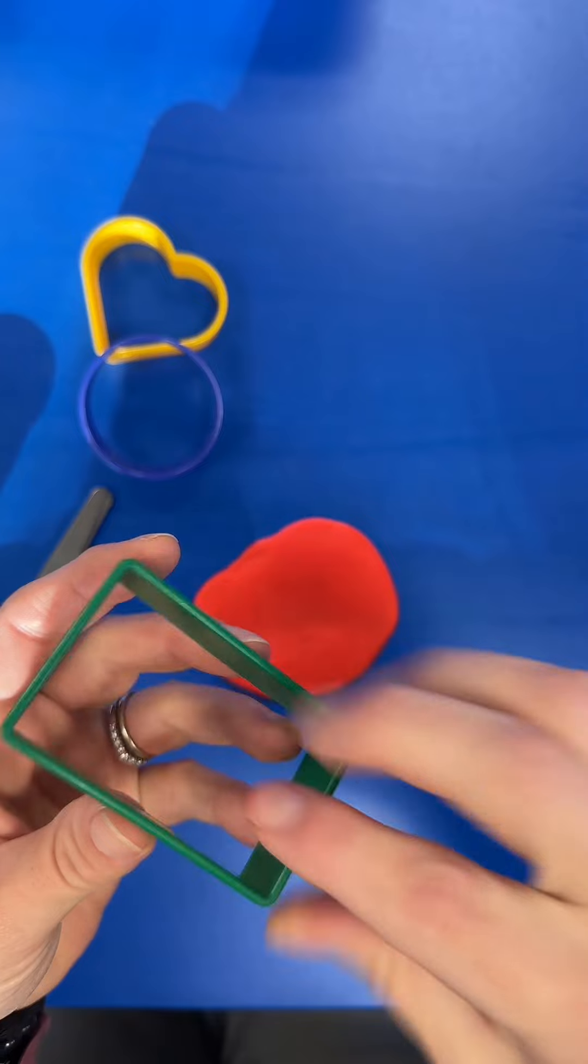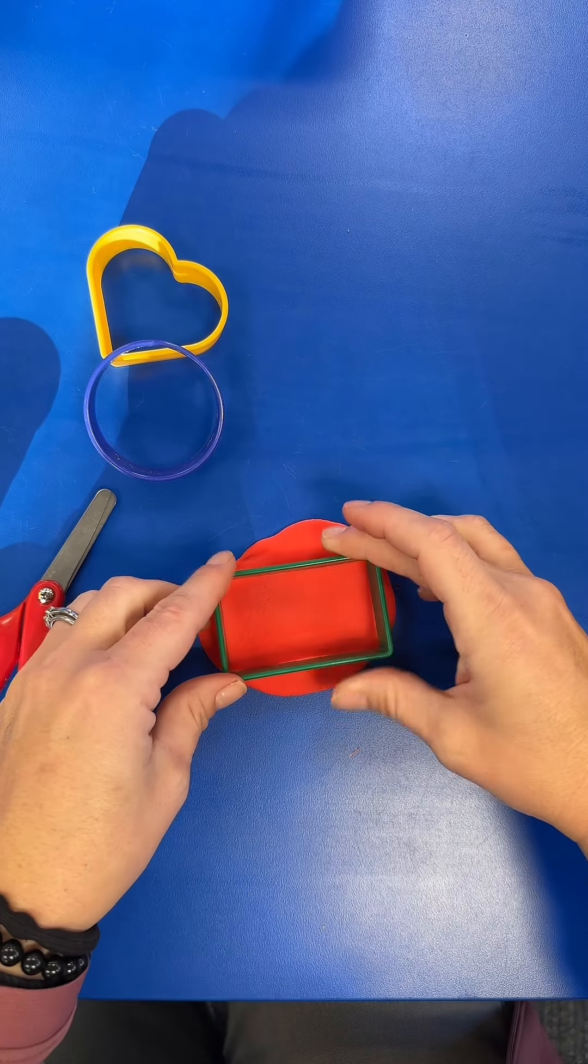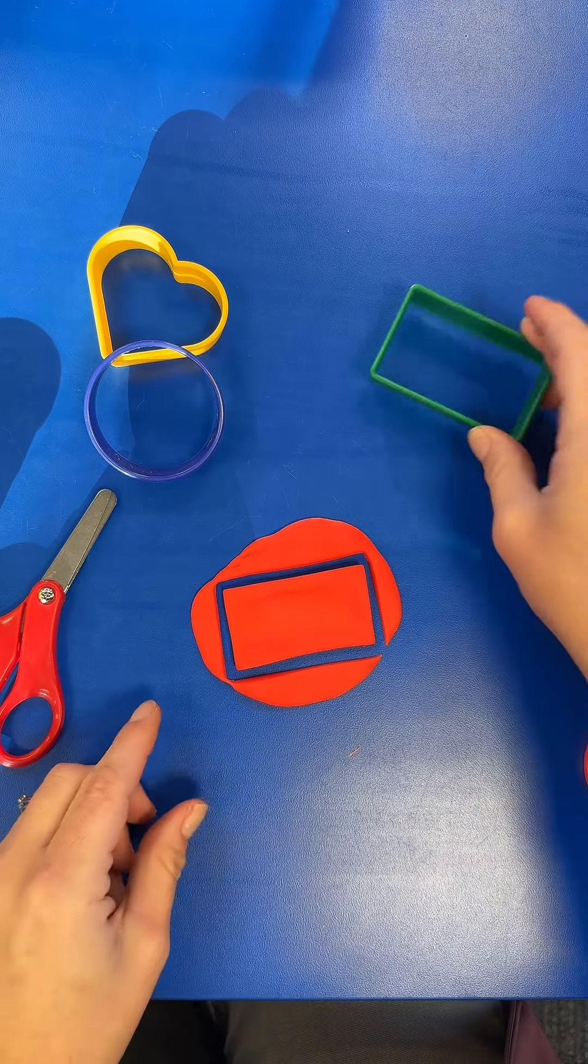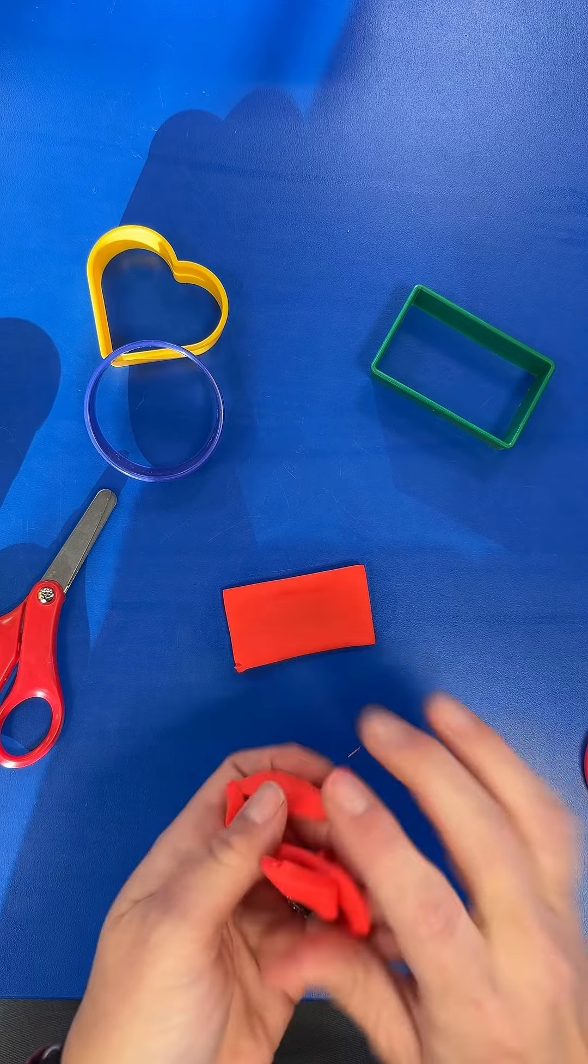Next, we're going to learn about cookie cutters. There's a sharp side and there's a thick side. The sharp side has to go down into the playdough to cut it. Push it down and then shake, shake, shake. After everybody had their shape, we handed them the first letter of their name so that they could stamp their letter into the playdough.